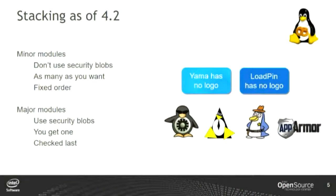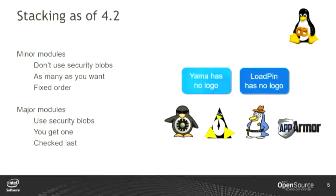Stacking is in 4.2. With 4.2 we introduced the concept of a minor module and a major module. Security modules are set up today so that you have the opportunity to use what we call security blobs. All of the major kernel data structures that refer to system objects have security blobs associated with them, but you get one pointer. That's restrictive because it means you can only have one module using those pointers — otherwise they start clobbering each other. So we have minor modules that don't use security blobs, and major modules that do.